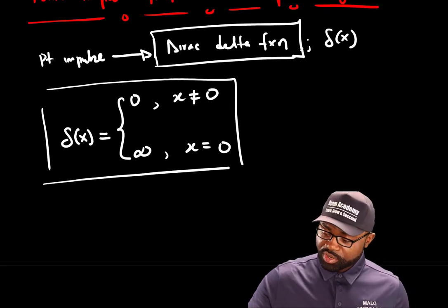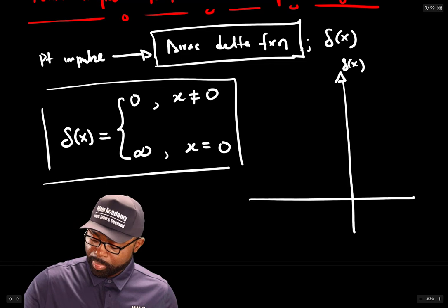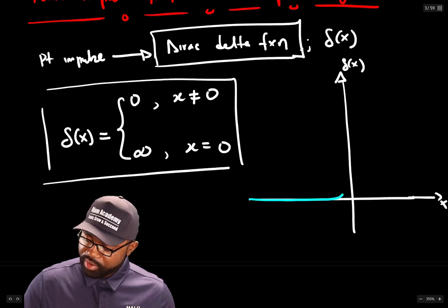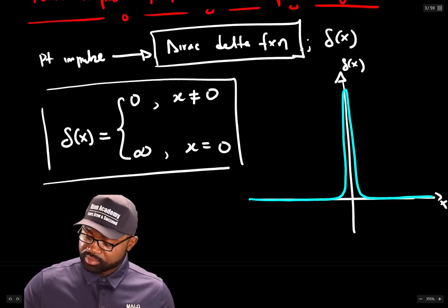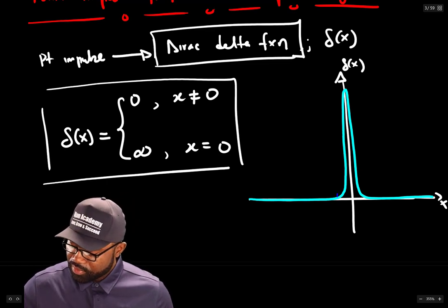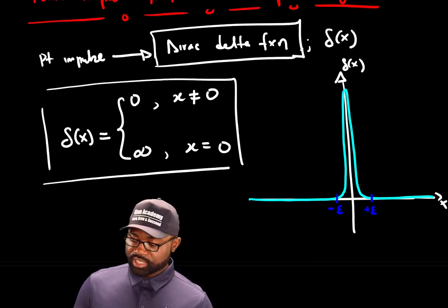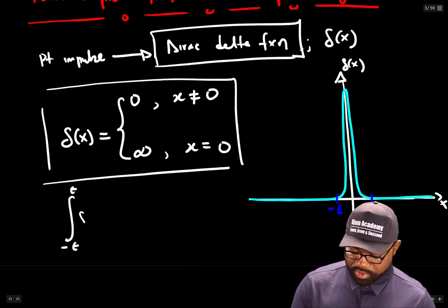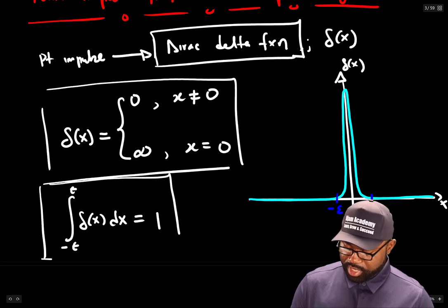If we draw a Dirac Delta function, it looks like zero everywhere, then infinitely large at the origin. Marking negative epsilon and positive epsilon, an important property is that the integral from negative epsilon to positive epsilon of Delta(x) dx is equal to one.